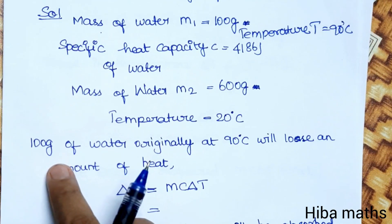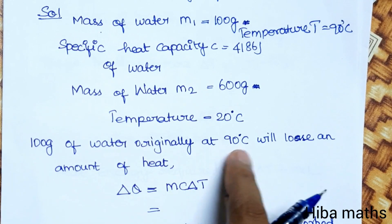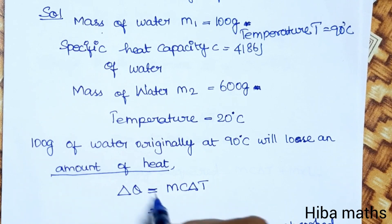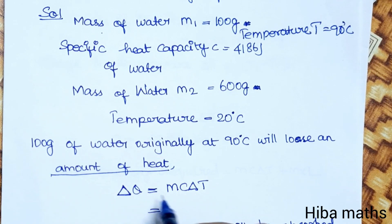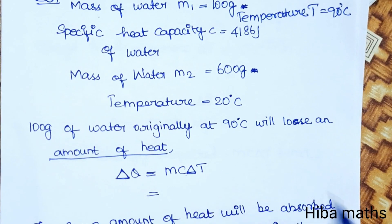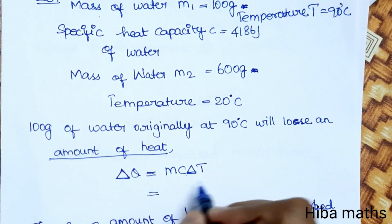100 grams of water originally at 90 degrees Celsius will lose an amount of heat. This is the most important concept. The amount of heat formula is ΔQ equals m times c times change in temperature.